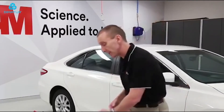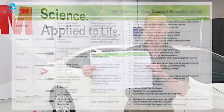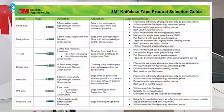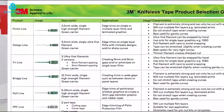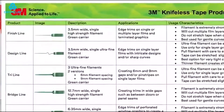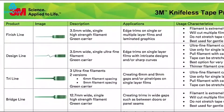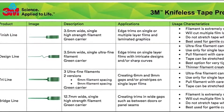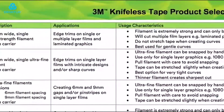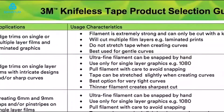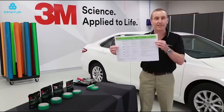To help with that, one thing I have done is put together this just one-page product selection guide. This gives you the key attributes and features of the eight different tapes in the range and really some of the key usage characteristics. You can download this — there's a link below the video where you can actually download this file and print it out. So this is a really great place to start to help you understand the difference between each of those eight products.